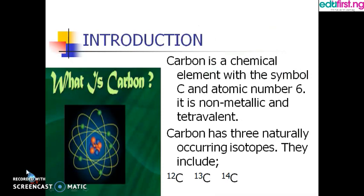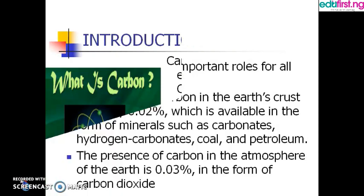What is carbon? Carbon is a chemical element with the symbol C and has an atomic number of six. It is non-metallic and tetravalent, meaning it has four valence electrons. Carbon has three naturally occurring isotopes: carbon-12, carbon-13, and carbon-14, of which carbon-12 and carbon-13 are stable while carbon-14 is radioactive in nature.